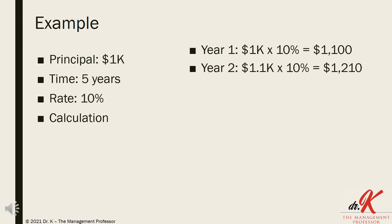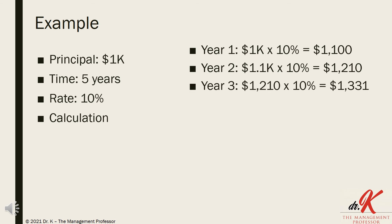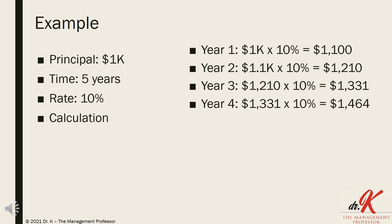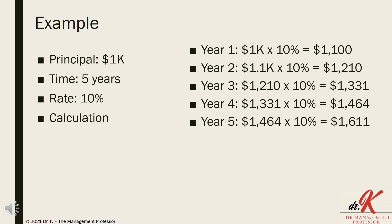In year two, we take that $1,100, multiply it by 10%, and we have $1,210. In year three, we take that $1,210, multiply it by 10%, and we have $1,331. In year four, we take that $1,331, multiply it by 10%, and we have $1,464. Then in year five, we take that $1,464, multiply it by our guaranteed rate of 10%, and we have $1,611.